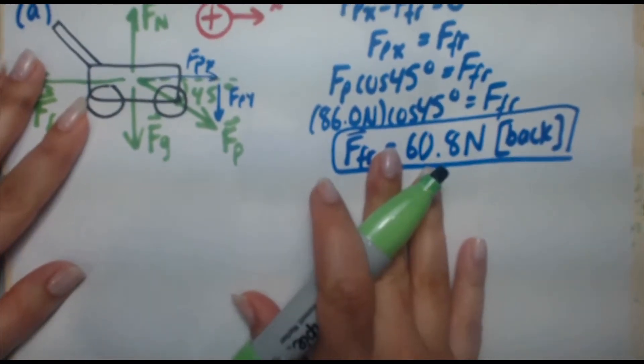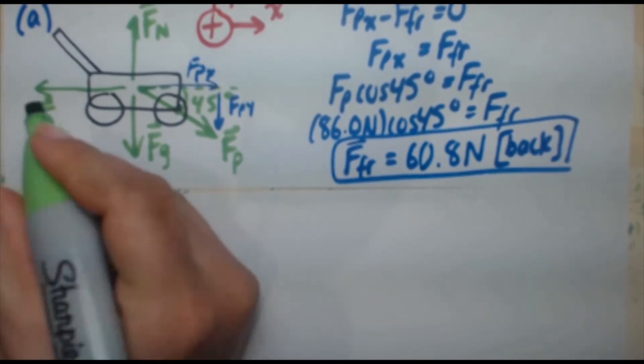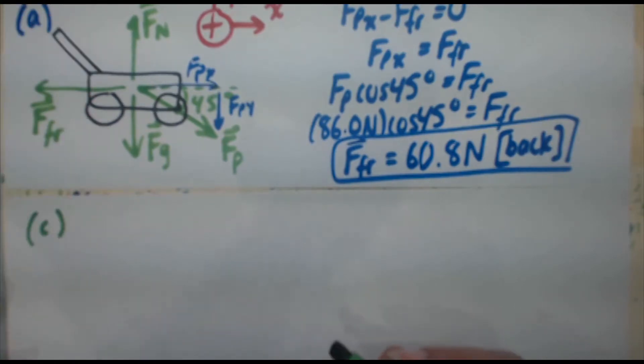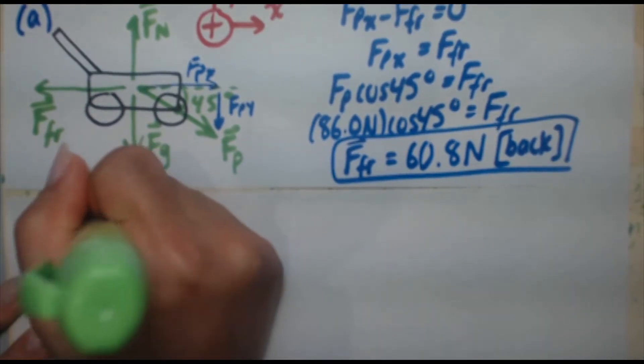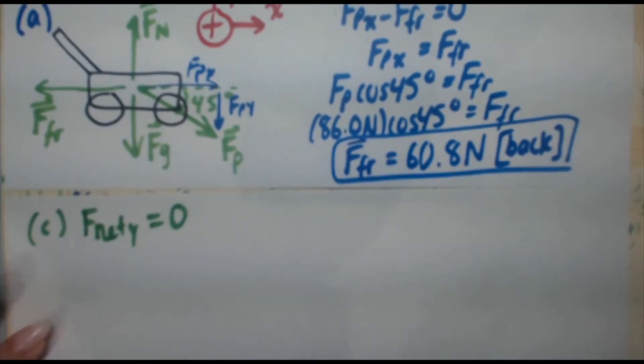Okay, let's go up here. Let's see if I can keep that on the screen. Okay, so for Part C, all vertical forces have to balance out, again, because there's no acceleration. So no acceleration means no net force. So f net y equals zero.